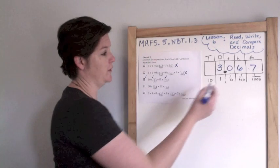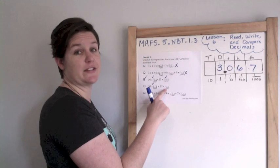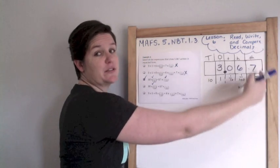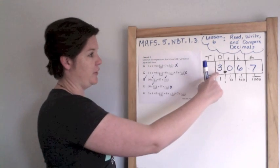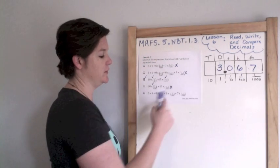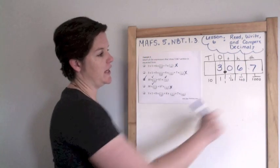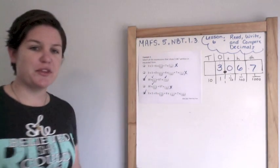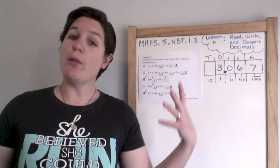Thirty times one-tenth — thirty tenths, yes. Sixty-seven times the one-hundredths place — sixty-seven lands in the thousandths place, so no, that does not work. Three times one, yes. Zero times one-tenth. Six times one-hundredth. Seven times one-thousandth. The third and fifth answers are correct — you need both to get it right.